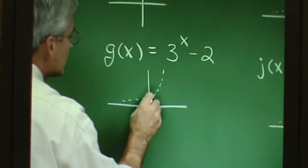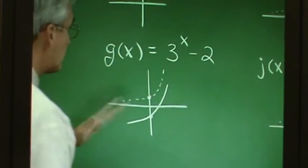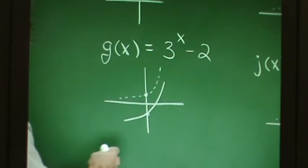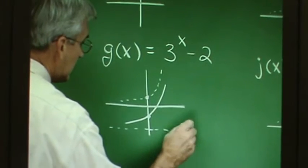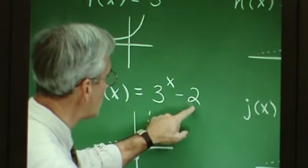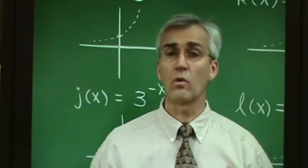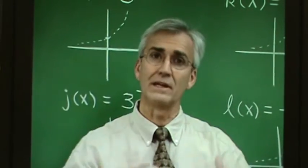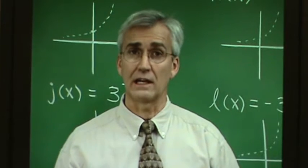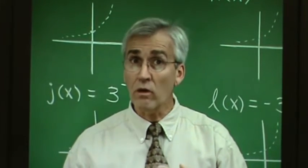The familiar point (0, 1) drops down 2 units, and the graph shifts accordingly. An interesting consequence: because the x-axis is an asymptote, dropping the graph down also drops the asymptote to that new level. Remember the general rule from transformations: if addition or subtraction occurs after the prevailing operation (exponentiation), the graph moves up or down; if it's before, the graph moves left or right.